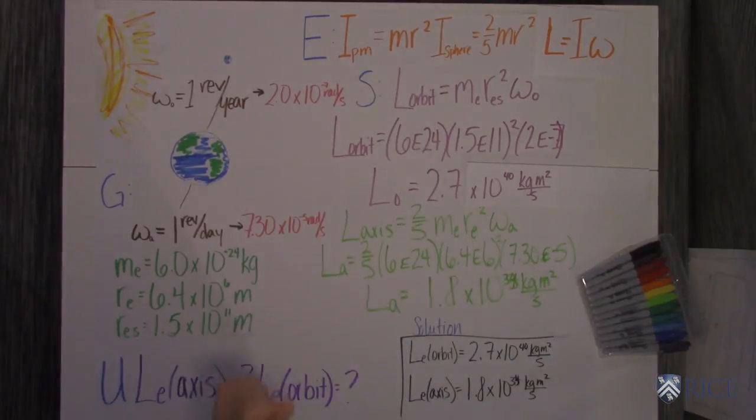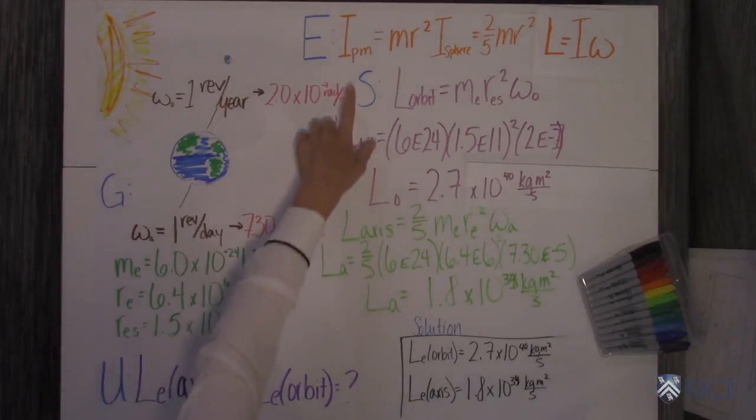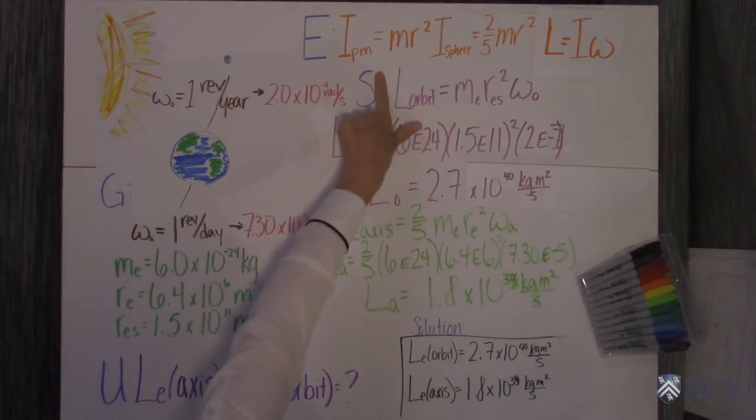And then we have to know the moments of inertia. We're going to treat the Earth in orbit as a point mass. And there's a couple of reasons for that, but basically it's because the Earth in its orbit is so far away from the Sun that we can treat it like a point mass. So that's I equals mr squared.